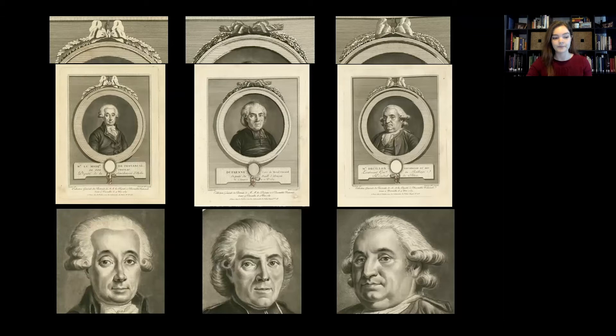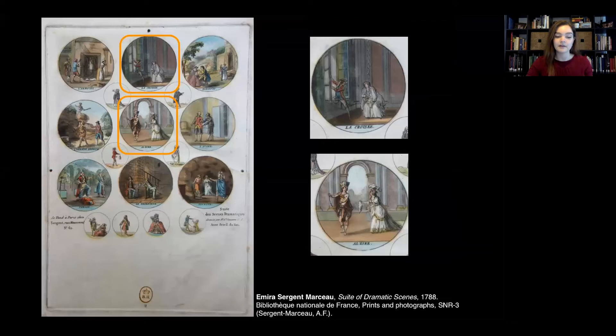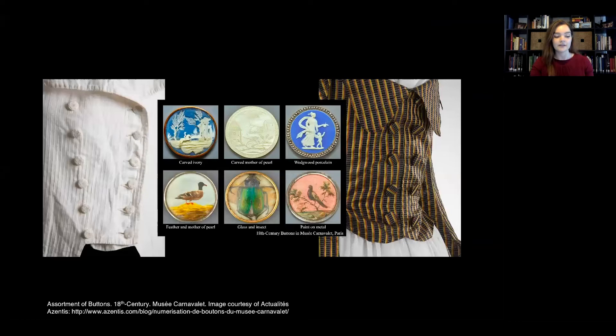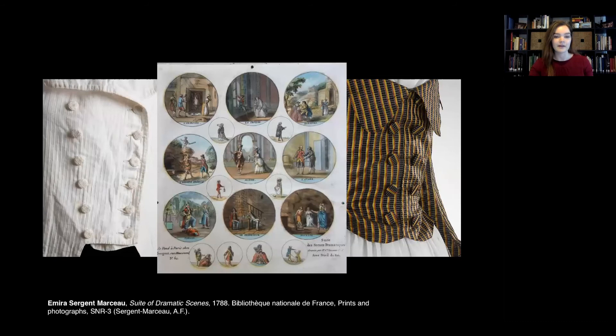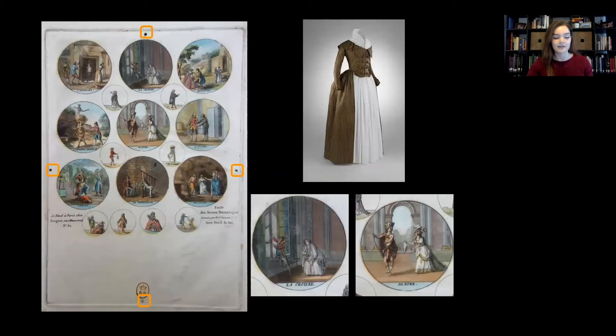Émirat Sergent Marceau's earliest prints, done before her move to Paris in 1789, also directly concerned the body — they were designed to be worn on it. Her sheet displays a series of approximately one-inch roundels filled with scenes from popular theatrical dramas meant to be cut out, put under glass, and fashioned into buttons for coats, vests, and other garments. The 18th century saw a mania for buttons, which could be made out of anything and everything, from carved ivory to insects and prints. These prints for buttons are also printed in color, which we can tell from the tiny registration dots at each edge of the print, pointing to her mastery of this difficult and advanced technique.